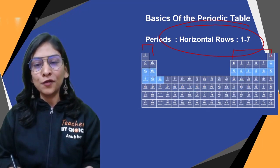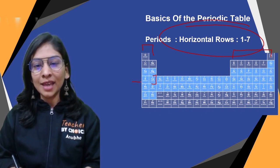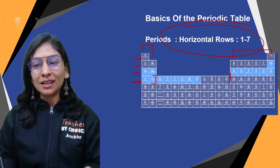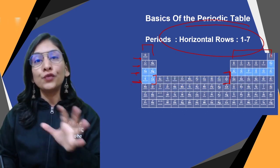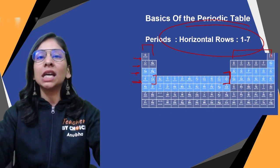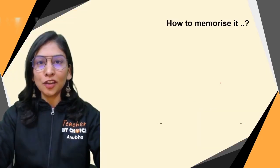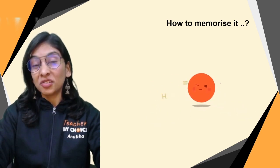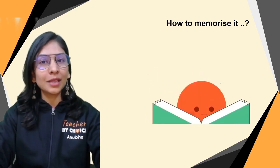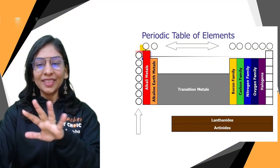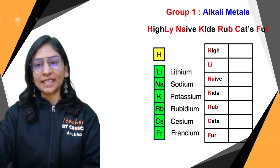The topics important for your class are groups 1, 2, and 13 to 18, and elements up to calcium in the fourth period. I'll also cover how to remember elements up to zinc — atomic number 30. We'll cover how to memorize important groups and periods, the first 30 elements, and the four blocks.